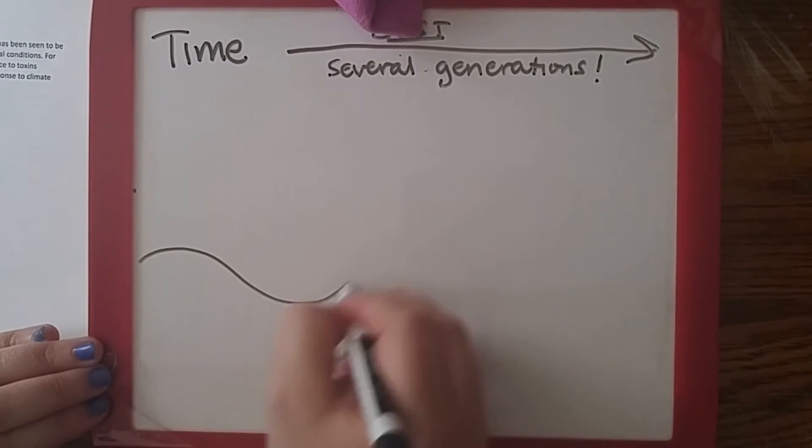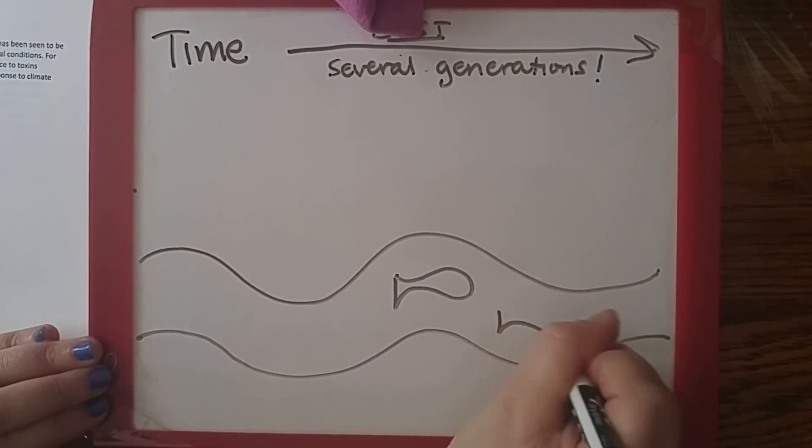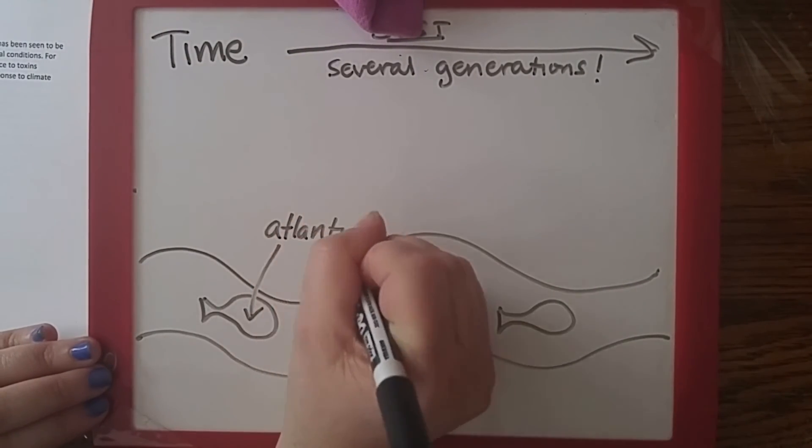Over the past 50 years, we've observed the Atlantic tomcod evolve resistance to toxins released into the Hudson River.